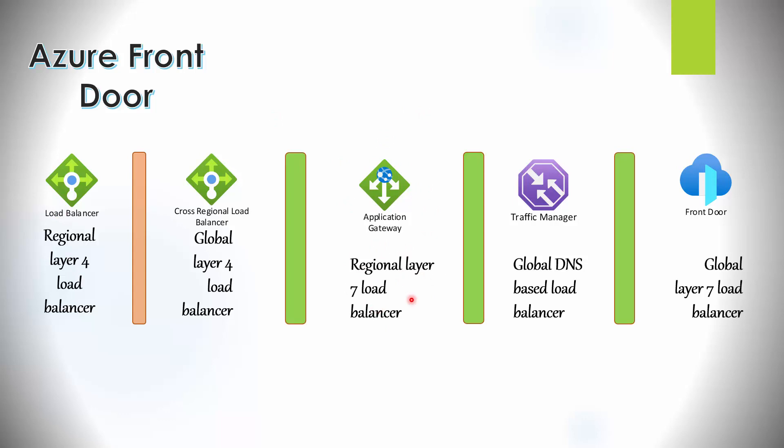The Application Gateway is a Layer 7 load balancer that is tied to a specific region, so Front Door is actually quite similar to the cross-regional or global load balancer, but that one is Layer 4 where Front Door is Layer 7. Front Door provides additional Layer 7 capabilities such as SSL decryption and encryption, threat scanning, a built-in web application firewall, caching, compression, and URL redirection.